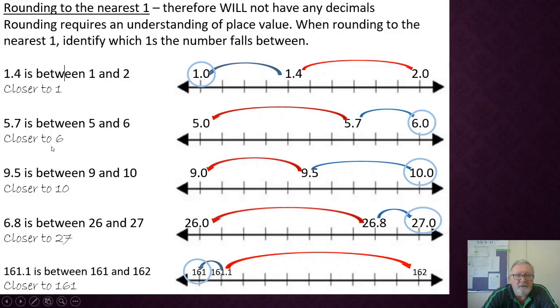Alright, five and seven tenths is between five and six and it's closer to six, it's rounded up. Nine and five tenths, well that's another example, sorry boys and girls, another example is where we are halfway and when we know it's halfway we always round up. So nine and five tenths rounds to ten.